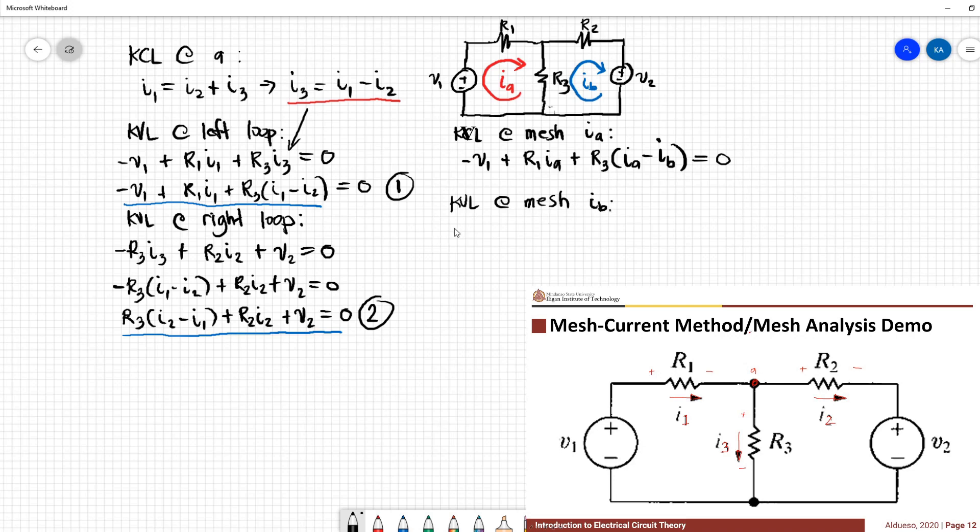Now if we apply KVL at mesh Ib, we have R3 times (Ib minus Ia) plus R2 times Ib plus V2 equals zero.